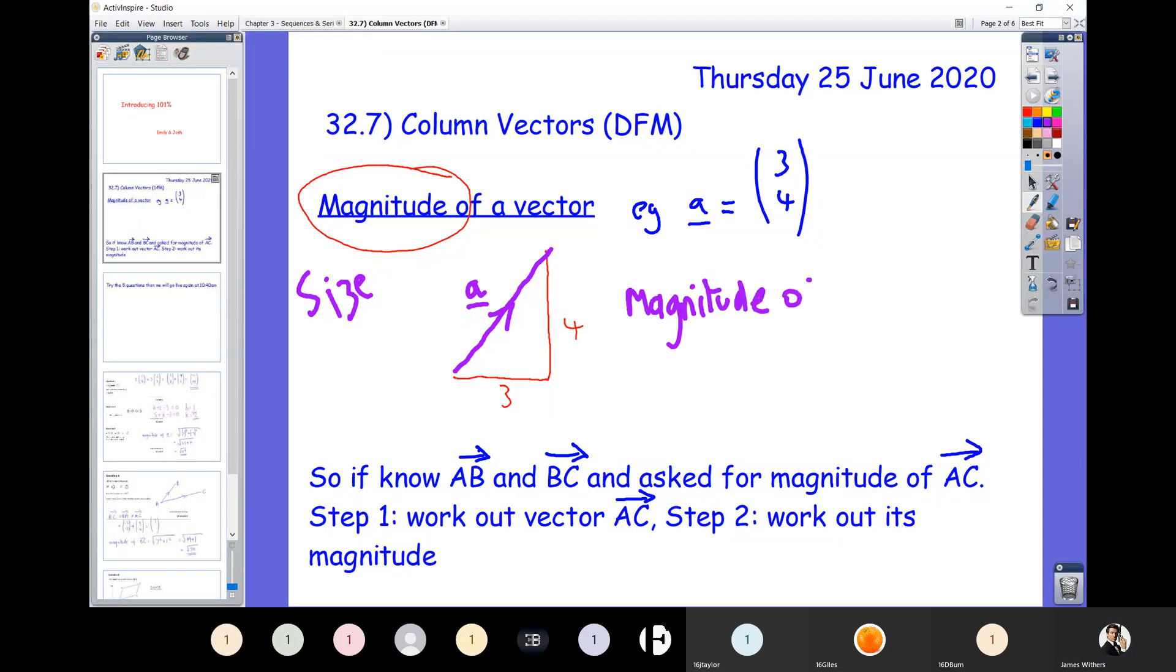You simply just have to do Pythagoras. So we're going to do the square root of 3 squared plus 4 squared, which is square root of 9 plus 16. So that's the square root of 25, which is 5. So the answer would be 5.